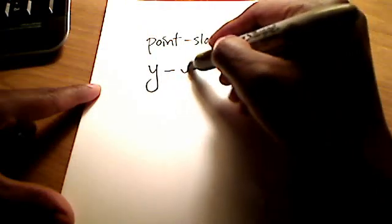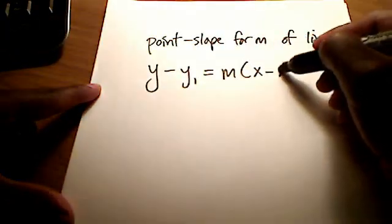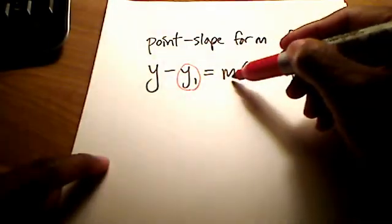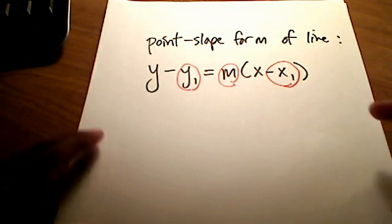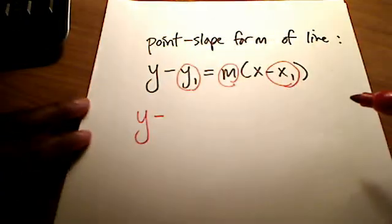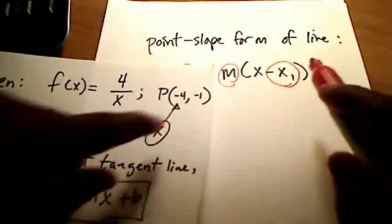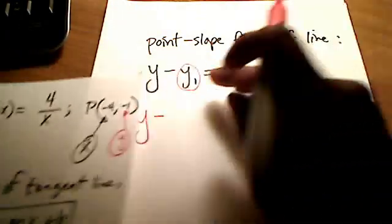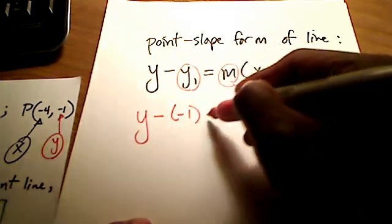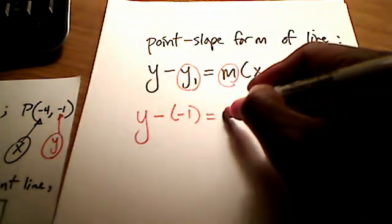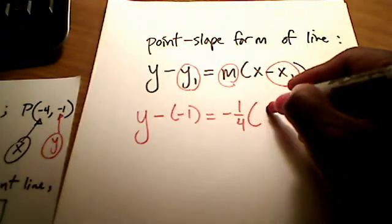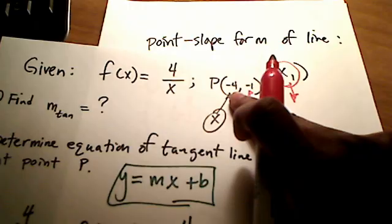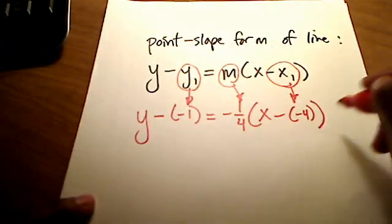Point slope form looks simply like this: y minus y sub 1 is equal to m times x minus x sub 1. And the three variables here that I'm going to replace is this one, this one, and this one. Everything else stays the same. So it's going to be y minus negative 1, because I was given the negative 1 as the y portion of the coordinate. I know what my slope is now. My slope was negative 1 fourth. And I've got x minus, in place of x sub 1, the x part of my coordinate, which is negative 4.